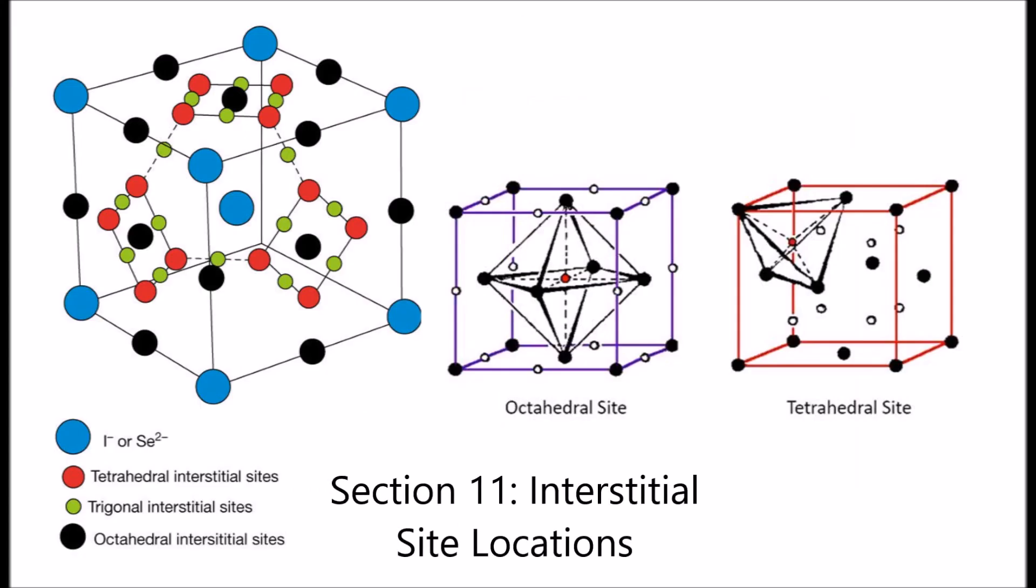The current pictures on the screen show all the locations of the octahedral and tetrahedral interstitial sites on the FCC and BCC structures. Thank you for watching this video. I hope it has been informative, and please do subscribe if you want to hear more explanations on material science topics.